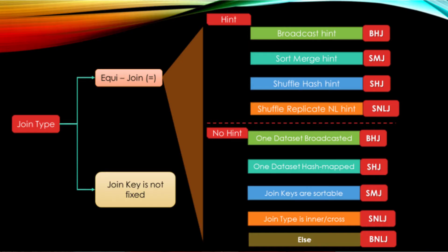For equi join, we first look at the joining hint. If the broadcast hint is given, we choose broadcast hash join. If it is a sort merge hint, we choose sort merge join — if the joining keys are sortable. If the hint is shuffle hash join, we choose shuffle hash join. If the hint is shuffle replicate nested loop join, we choose the Cartesian product or shuffle nested loop join. But the join type can only be inner or cross join — left outer, right outer, or full outer join are not supported.